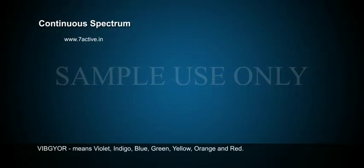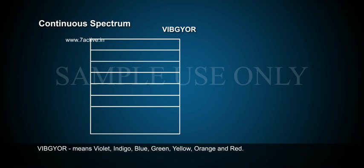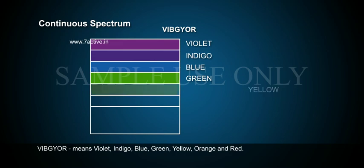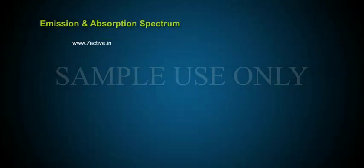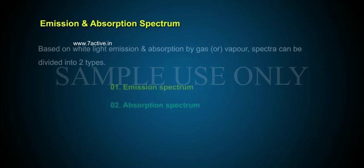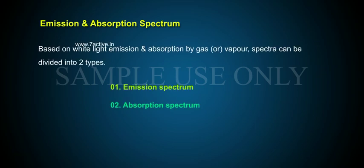VIBGYOR means violet, indigo, blue, green, yellow, orange, and red. Emission and Absorption Spectrum: Based on white light emission and absorption by gas or vapor, spectra can be divided into two types.